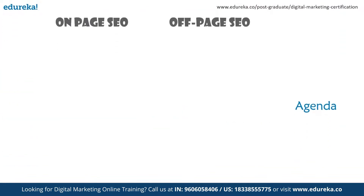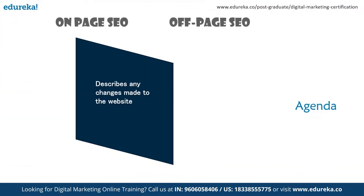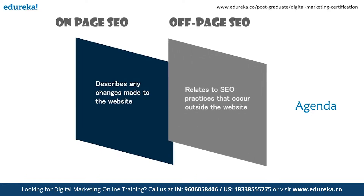The main agenda of on-page SEO describes the changes that can be made to your website, including the copy, page title, meta description, header tags, and HTML code. Whereas off-page SEO's agenda relates to any SEO practices that occur outside your website, including link building, social media marketing, and influencer marketing.